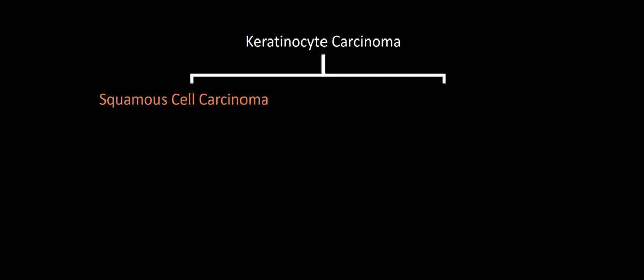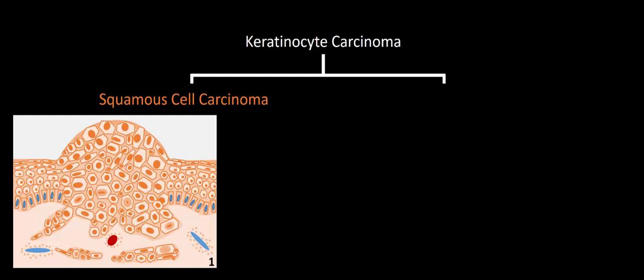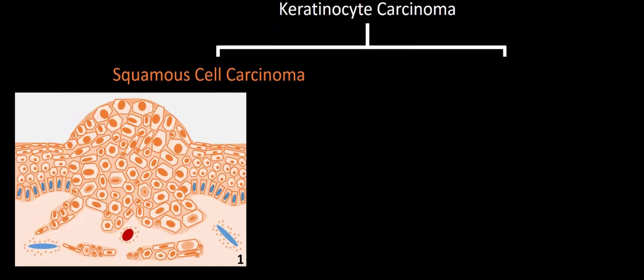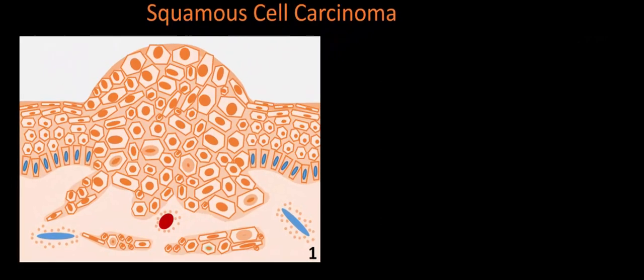We'll start with squamous cell carcinoma, then do the same for basal cell carcinoma. Starting with a cartoon image of what SCC looks like histologically: the darker tan color at the top represents the epidermis, the lighter tan below is the underlying dermis, and the blue and red circular structures indicate blood vessels. The abnormality in the middle of the image represents the squamous cell carcinoma.